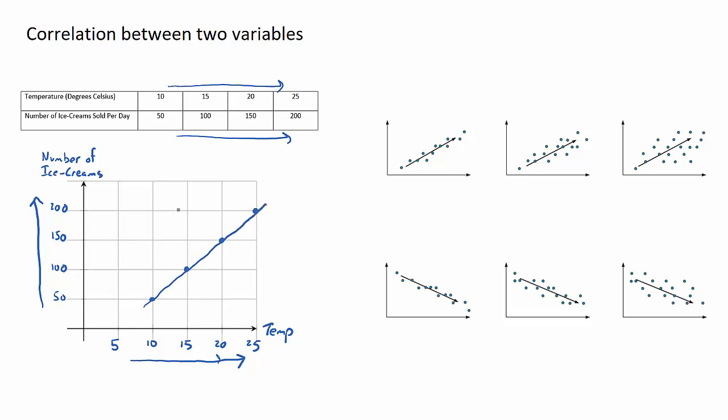An example where variables aren't correlated would be if the data points look like this. There's no correlation or link between an increase in one variable and an increase or decrease in the other.